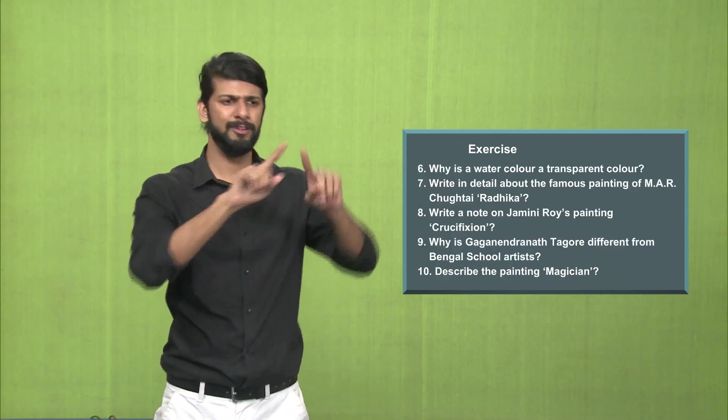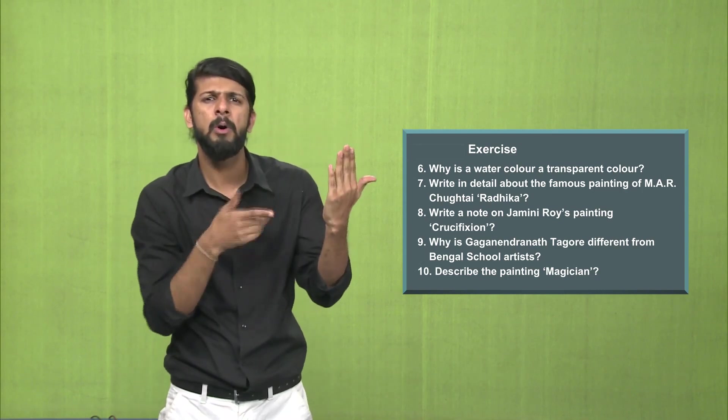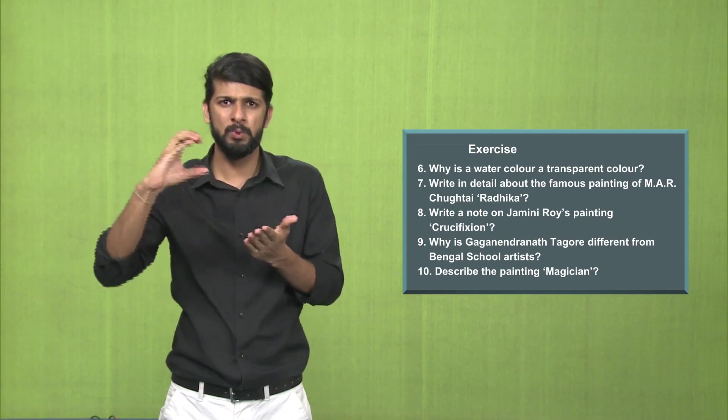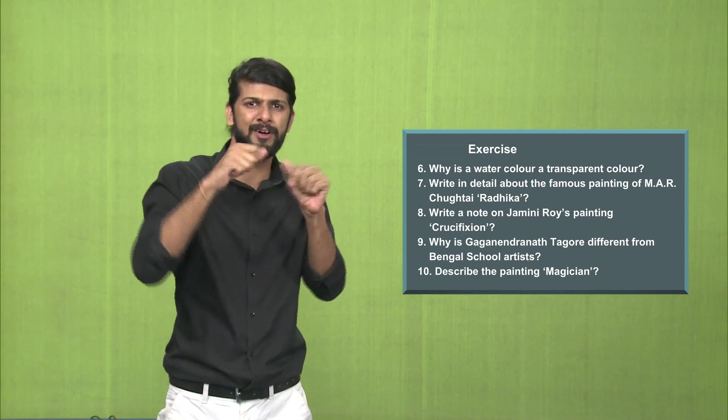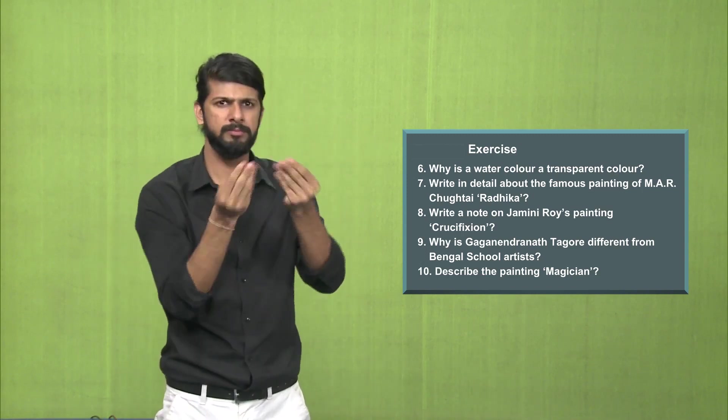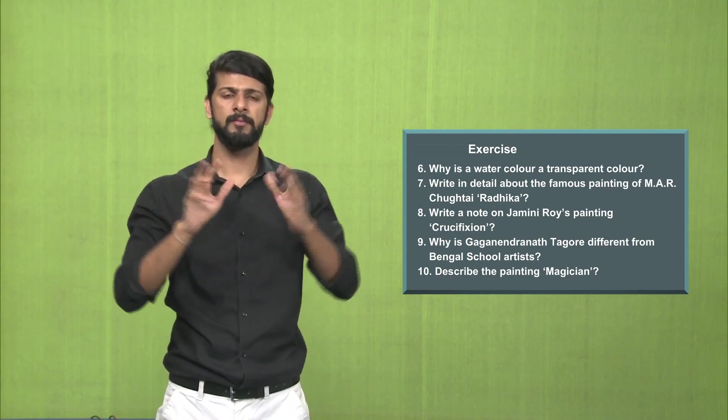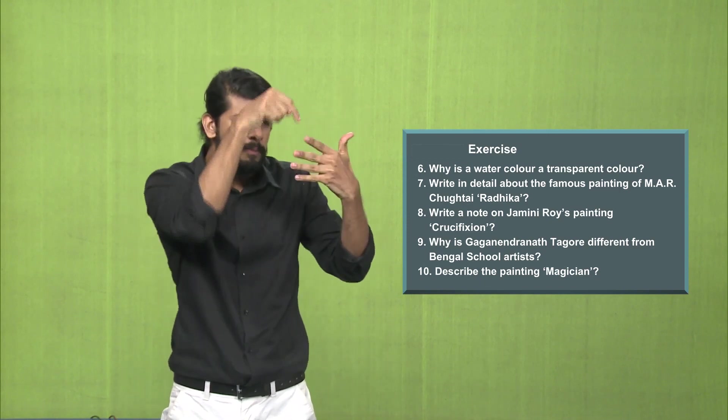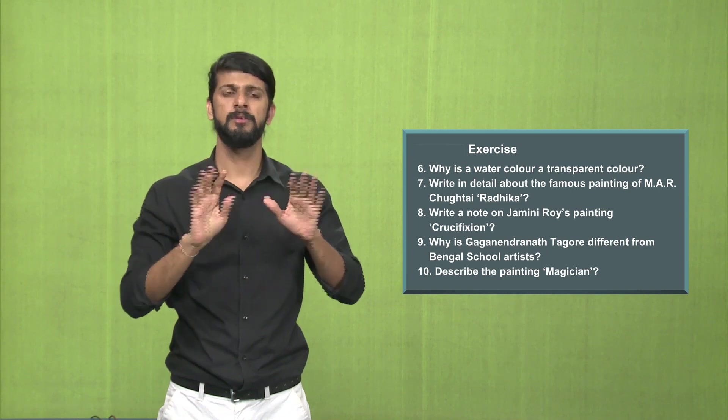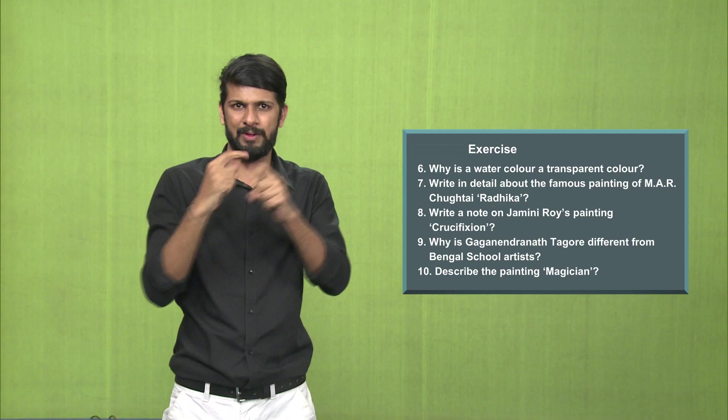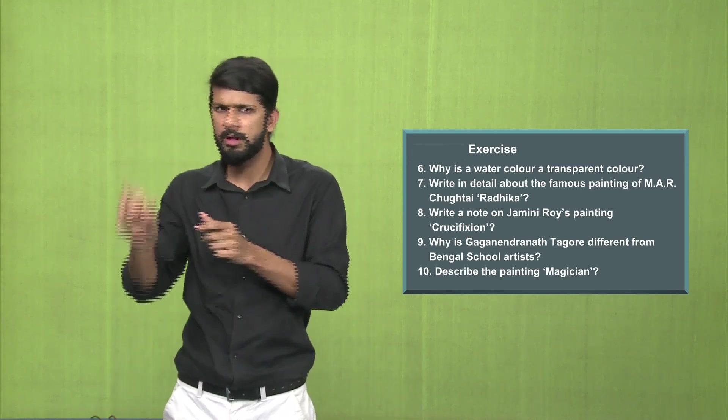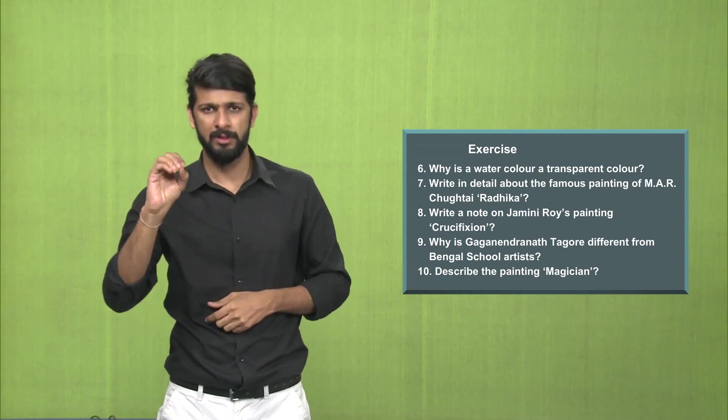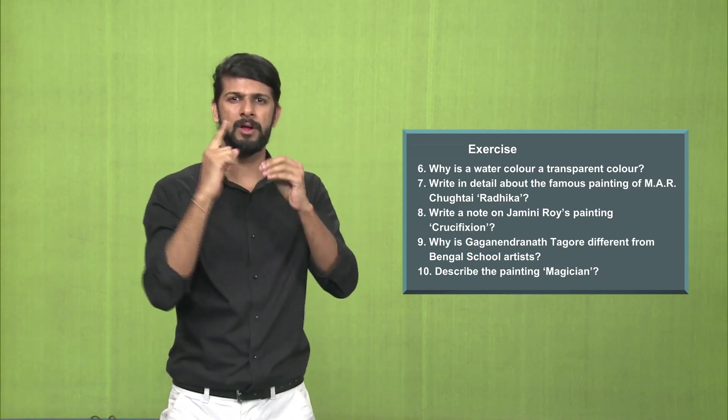Question number 6, why is watercolor a transparent color? Why does it have the transparency? Explain. Question number 7, write in detail about the famous painting of M.A.R. Chuktai called Radhika. Question number 8, write a note on Jamini Roy's painting, Crucifixion. Question number 9, why is Gagendranath Tagore different from the Bengal school artists? Question number 10, describe the painting, Magician.